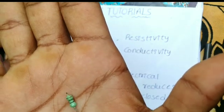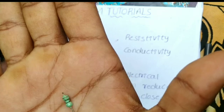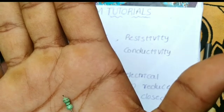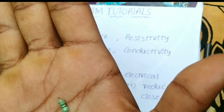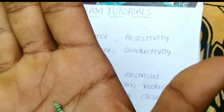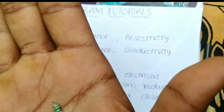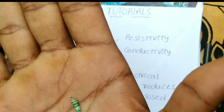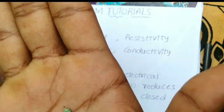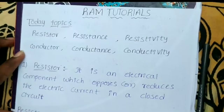This component works with alternating current. It is an internal component - a carbon resistance. Friends, you can see this inside the resistor.